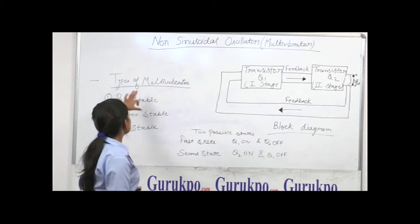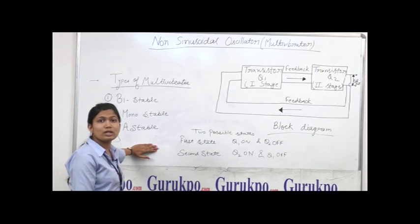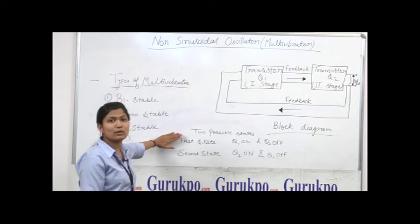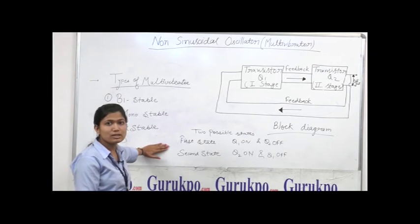Here we talk about the types of multivibrator. There are three types of multivibrator: first one is bistable, second one is monostable, and the third one is astable.